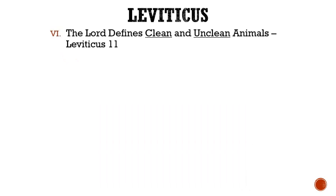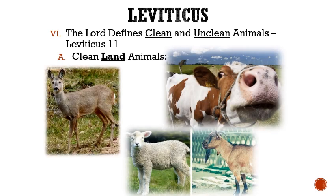Roman numeral 6: The Lord defines clean and unclean animals. Letter A: The clean land animals. These animals had to be those that had split hooves and those that chewed the cud — examples being cows, deer, goats, lambs, and others. Letter B: The unclean land animals include camels, conies, rabbits, and pigs, because while they do chew the cud, they are not split-hooved animals.